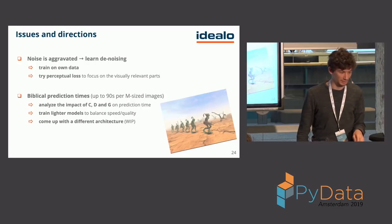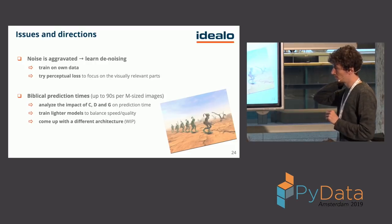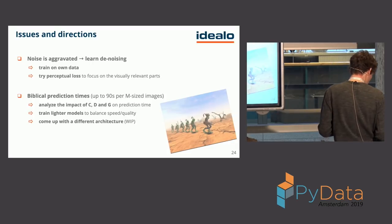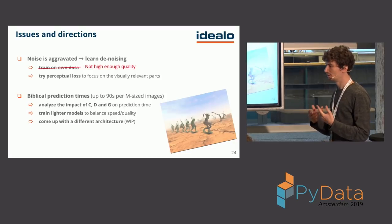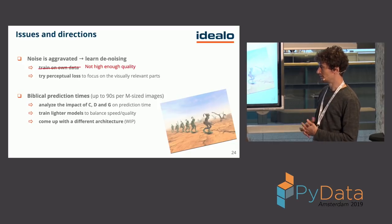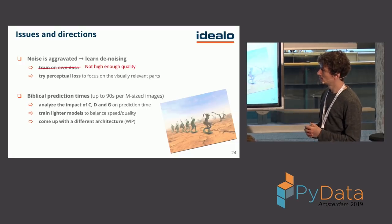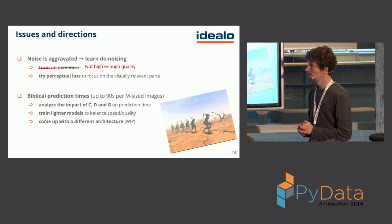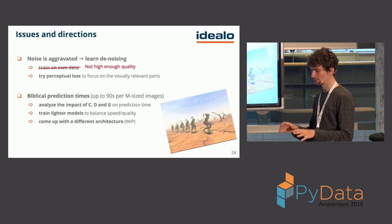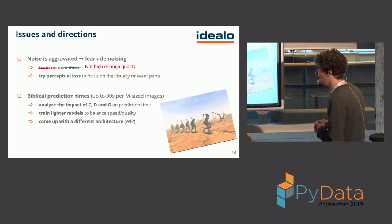So what are the issues and directions from here? First, noise is aggravated, so we need to learn denoising. We considered training on our own data to match the distribution, but that's a bad idea: our data has JPEG artifacts and we need really high quality training data — the DIV2K dataset, for example, is highly curated. Another direction is trying perceptual loss to help the loss function focus on what's relevant, like details, and ignore JPEG artifacts which are irrelevant for classification.